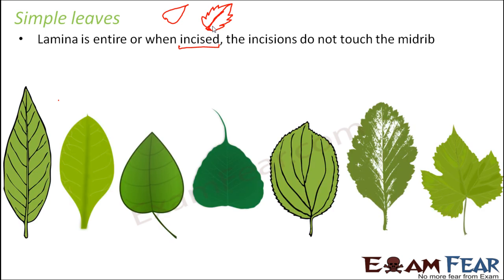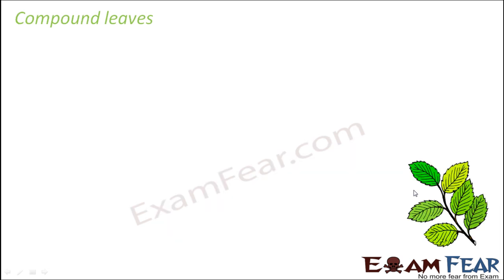Let us look at some examples of simple leaves. Even though the shapes of the leaves are all different, they are all categorized under simple leaves because their laminas are all entire. Even if incised, the incisions are not touching the midrib. You can see here the incisions are present — this incision is quite deep — but the incision is still not touching the midrib, unlike what would happen in a compound leaf.